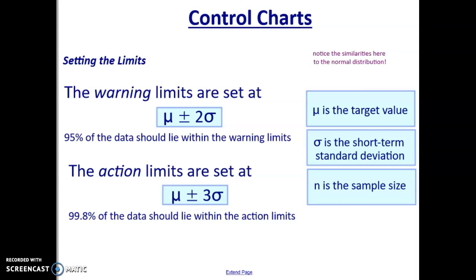You might want to note those down. You don't get given those in the exam. You need to know them. You need to be able to describe what happens in between each of those action limits, each of those warning limits, and either side of the target value. And you need to be able to describe what control charts are used for. They are used to check the quality of the production line. Make sure the machine is working correctly.